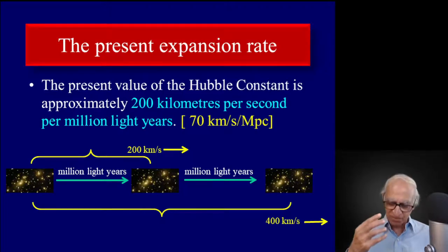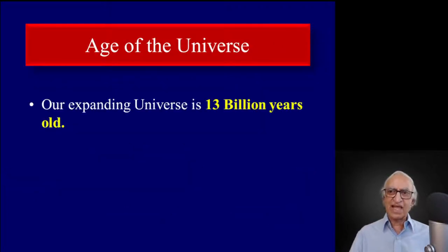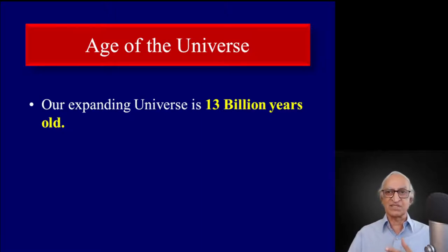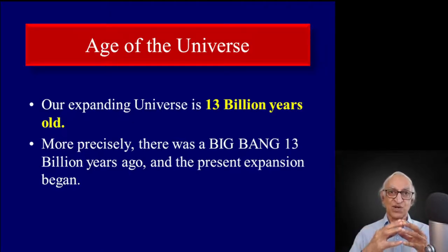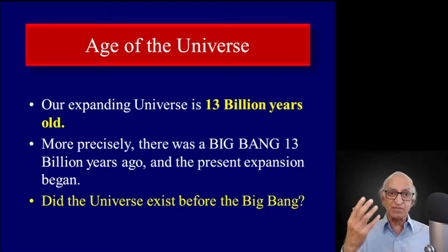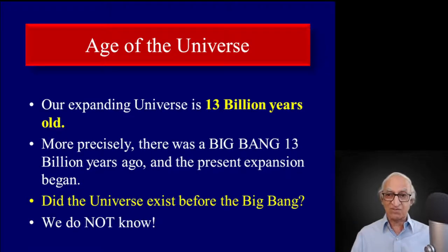We can believe this with considerable confidence. The age of the universe — the reciprocal of the Hubble constant — will be roughly 13 to 14 billion years old. More precisely, there was a Big Bang 13 billion years ago when the present expansion began, so it is the duration for which the expansion has been going on. Whether the universe existed before the Big Bang, before the expansion began, we do not know — we will come to this discussion a couple of lectures from now.